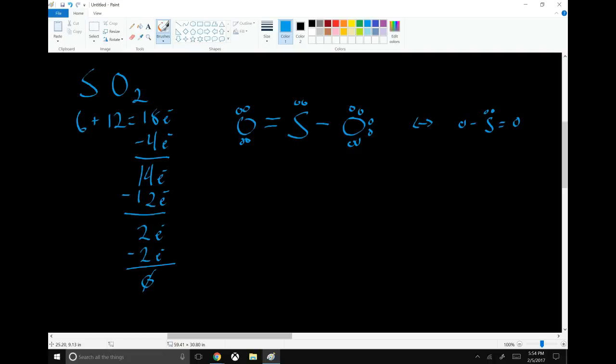So now we have a non-bonding pair. The electron domains, still three, one, two, three. But we have a pair of non-bonding electrons. So the electron domain geometry is still going to be trigonal planar. Electron domain geometry doesn't change just because there's a non-bonding pair.